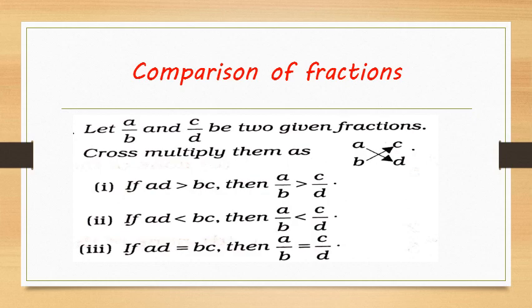Comparison of fractions: we can compare fractions in two ways — one by cross multiplication method, and another by taking the LCM and converting them into like fractions. The cross multiplication method is applicable only for comparing two fractions. Suppose a by b and c by d are two given fractions, and we cross multiply them.